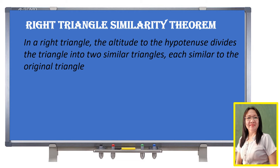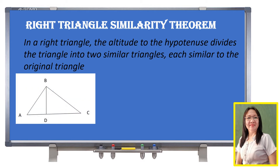Let us have the illustration. We have triangle ABC, where angle B is our right angle and side AC is the hypotenuse. We draw a segment that is perpendicular from angle B going down to the hypotenuse, and this is our segment BD.